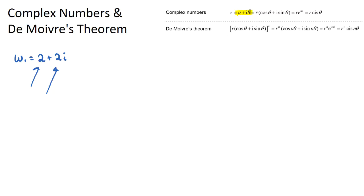This format here is called Cartesian form — that's when you have a plus ib. A very important concept we need to know is how to convert from Cartesian form to modulus-argument form, which is r cos θ plus i sin θ. That's the same as r cis θ — cis is just a short version of writing cos plus i sin, so if you ever see cis, that's just the same as cos θ plus i sin θ.